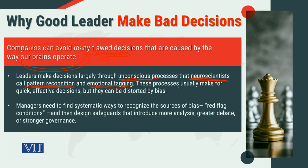These processes usually make for quick, effective decisions, but can be distorted by bias. Quick decision making involves heuristics, which means judgmental shortcuts. Those heuristics can sometimes create biases, including the halo effect, stereotyping, recency effect or recency error, selective perception, and many others. We have to be careful that when we are making decisions, we should not be falling into these biases.